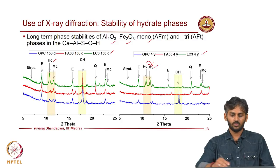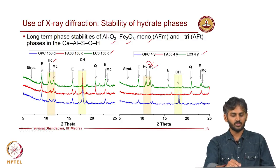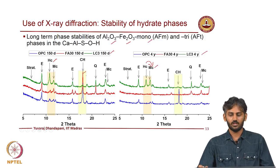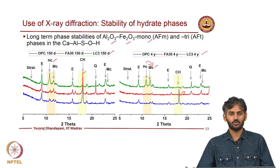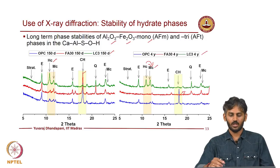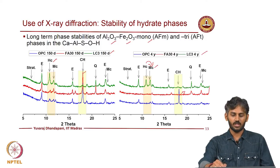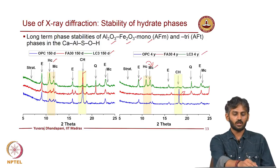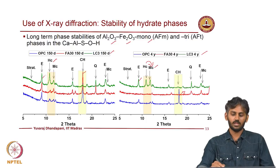Also, the calcium hydroxide peak in fly ash at around 4 years shows much less calcium hydroxide, because fly ash would have reacted by now and consumed most of the available portlandite. You can also see that ettringite is nearly stable and present in much higher amounts in the case of the calcined clay system.